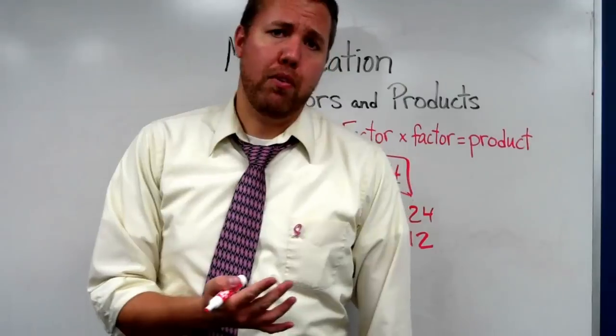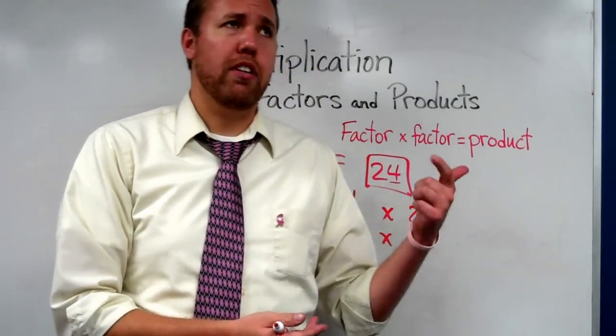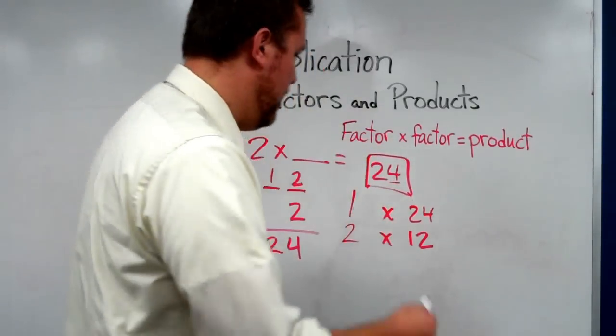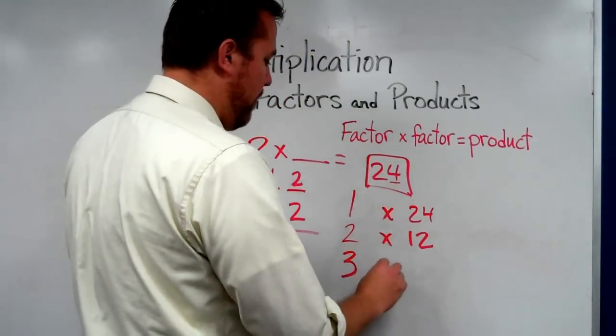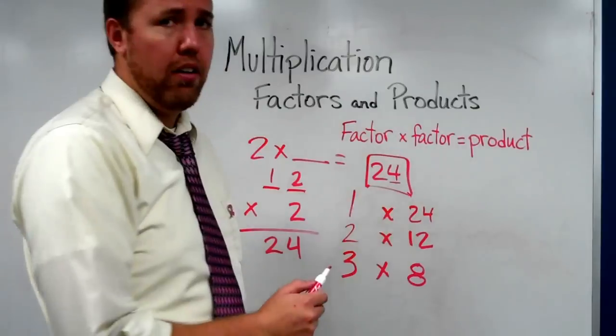Does 3 go into 24? Well, we can count by 3's: 3, 6, 9, 12, 15, 18, 21, 24. Yes. So 3 goes in, or we know that 3 times 8 equals 24.